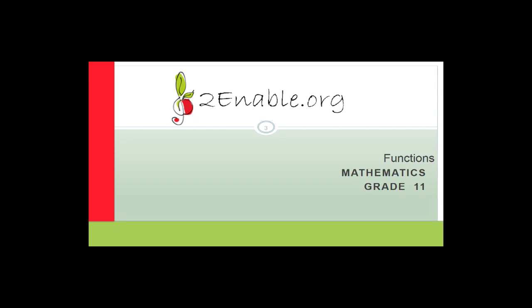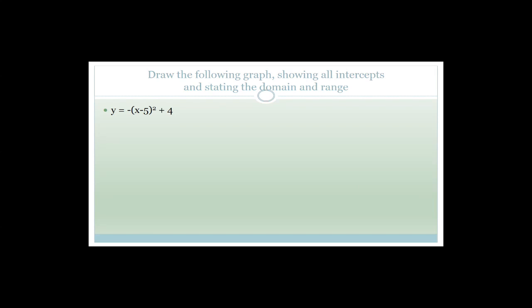Today we're going to continue going through some functions. We actually started in the last lesson going through some functions and looking at different things. We started the parabola and had a look at the turning point formula. The last example was this one, where it said draw the following graph showing all intercepts and stating the domain and range. We were using this turning point formula.